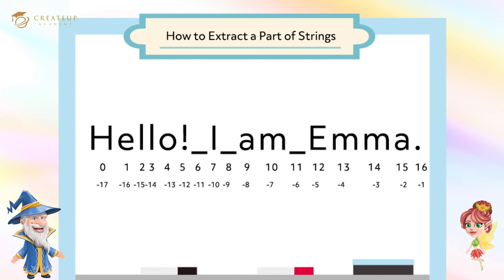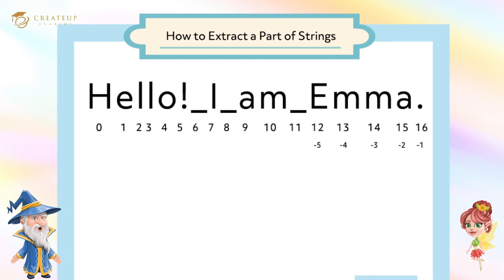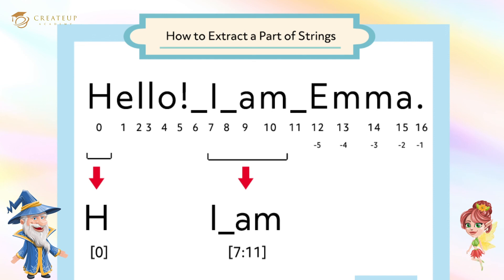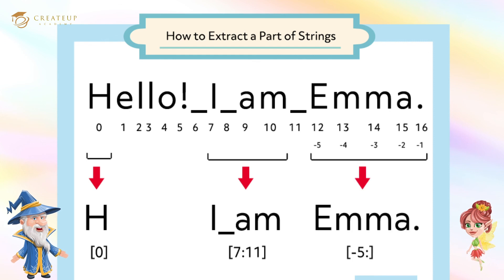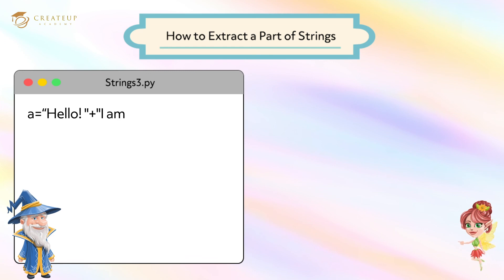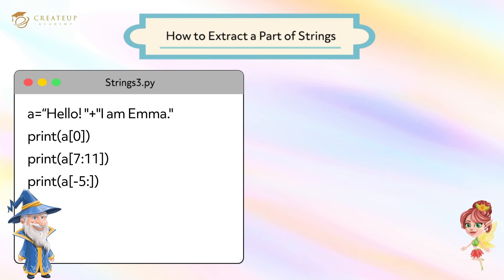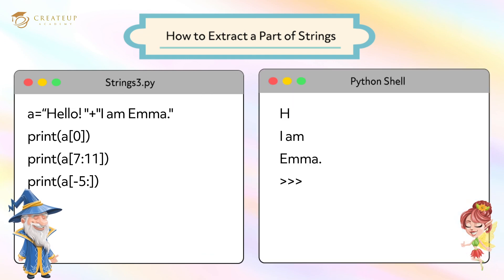We can also specify a position from the end of the line by using a negative value. For example, you can specify the third character from the end as negative 3. Now let's extract the first H, the middle 'I am', and the last 'Emma' from the string. Since H is the 0th character, specify it using brackets. 'I am' is the range from the 7th to the front of the 11th character, so specify it using brackets. 'Emma' is the 5th character from the end, so specify it using brackets. I save the program and run the module. I was able to extract some of the string.